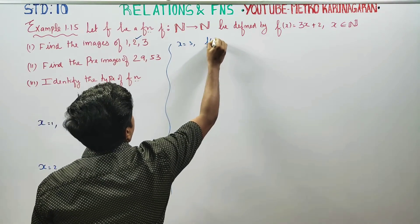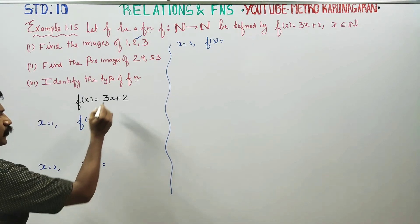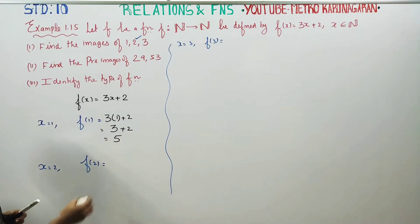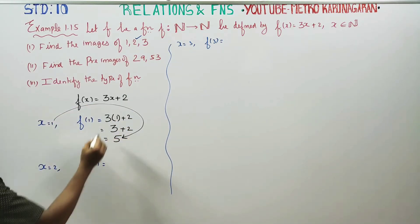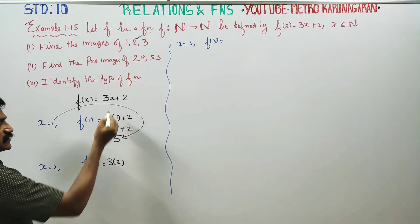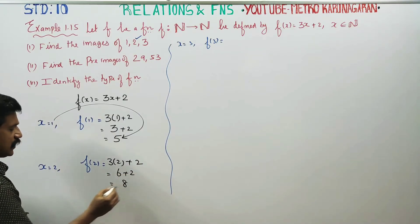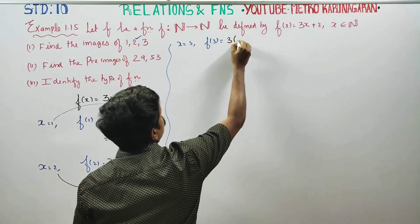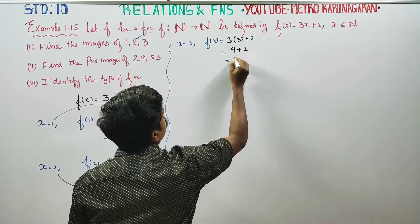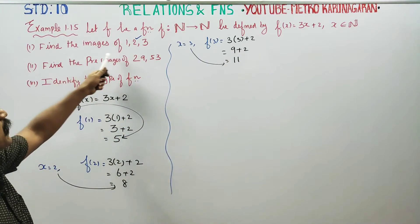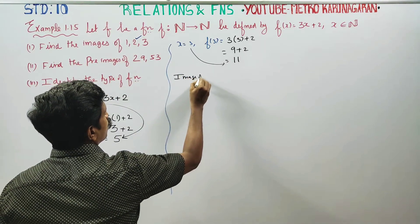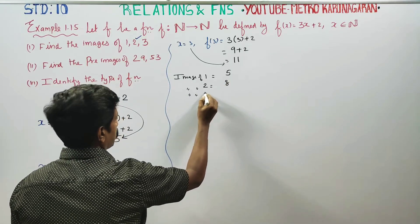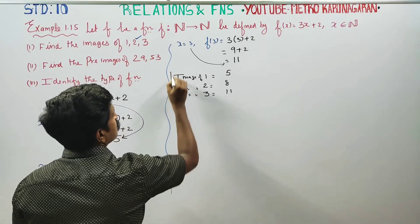To find the image, just substitute in the formula. For x=1: 3 into 1 plus 2, that is 3 plus 2 equals 5 — image of 1 is 5. For x=2: 3 into 2 plus 2, that is 6 plus 2 equals 8 — image of 2 is 8. For x=3: 3 into 3 plus 2, that is 9 plus 2 equals 11 — image of 3 is 11.